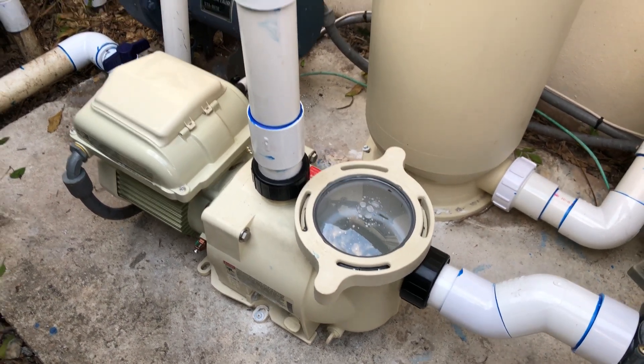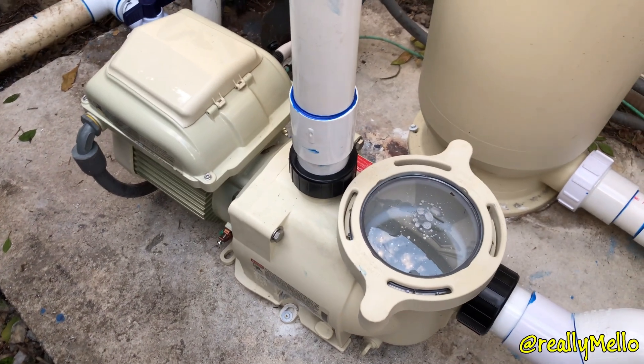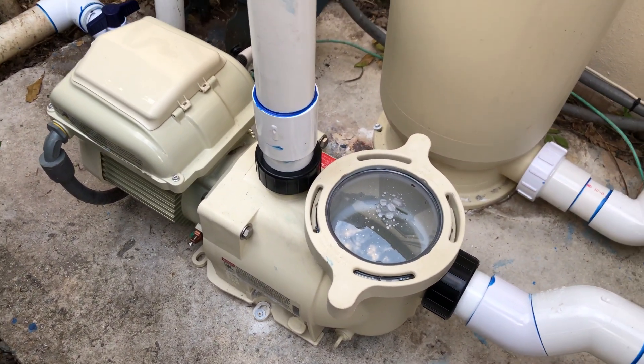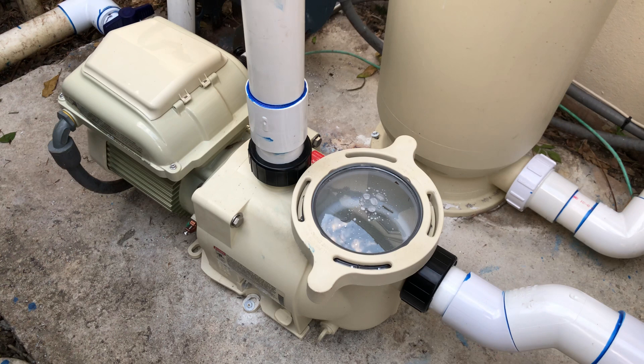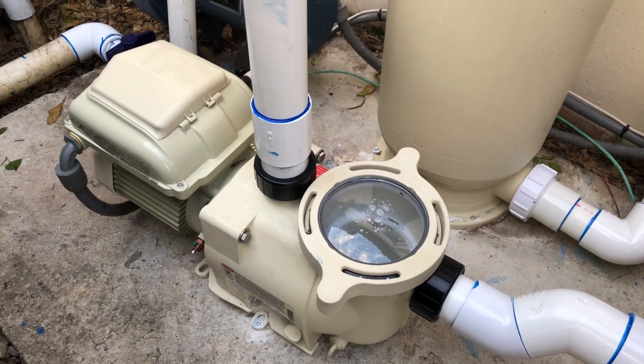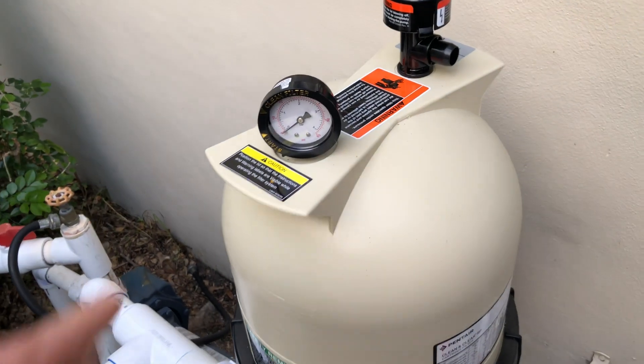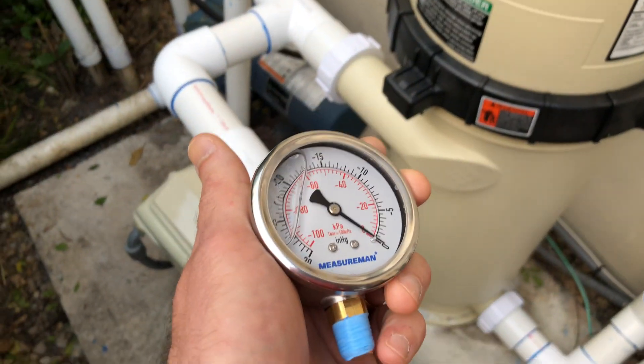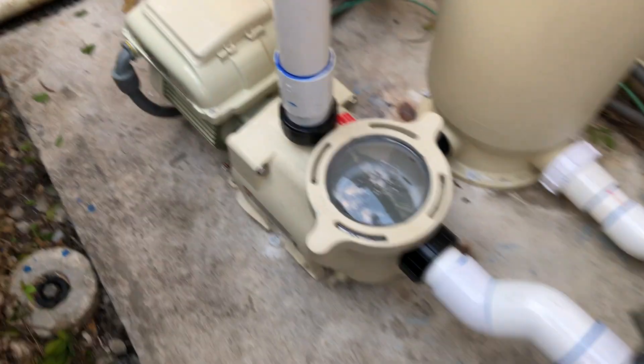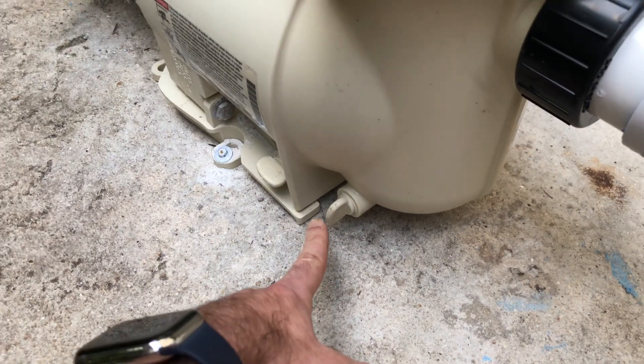This is the Pentair Super Flow, and what this allows me to do is dial in the RPMs so that I can control how many gallons per minute my pool pump runs at. And to figure that out though, I don't have a flow meter, so I looked up how to do a flow calculation using the pressure gauge on the filter and then adding a vacuum gauge in line on the pool pump here on the suction side.